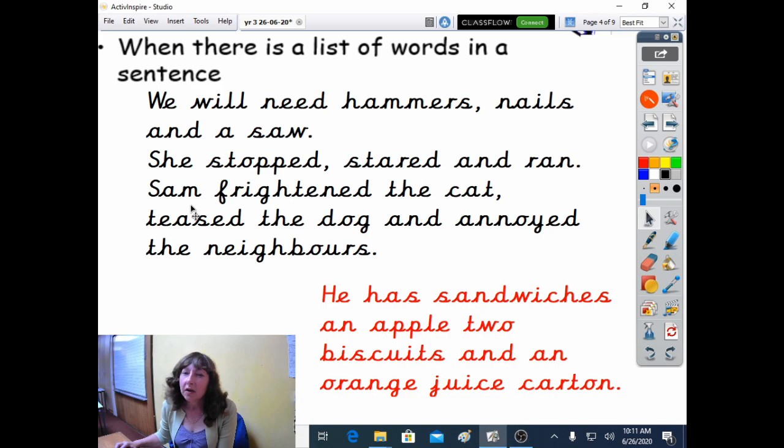This list contains a phrase between each of the commas. So we have Sam frightened the cat, teased the dog, and annoyed the neighbours.